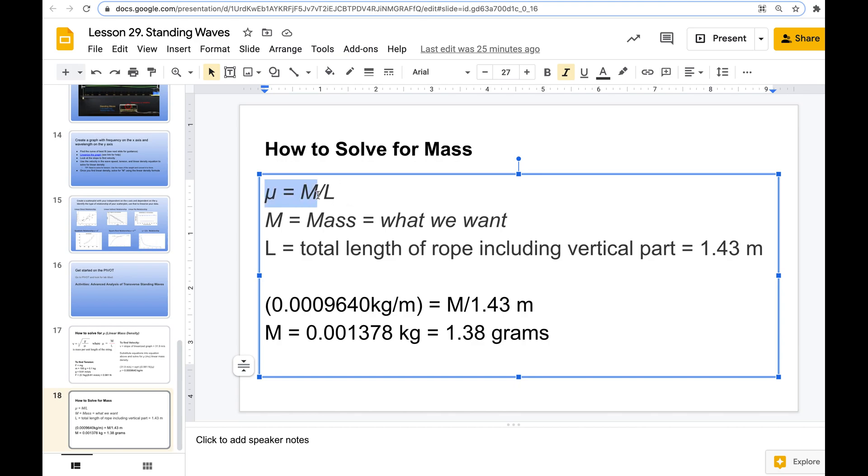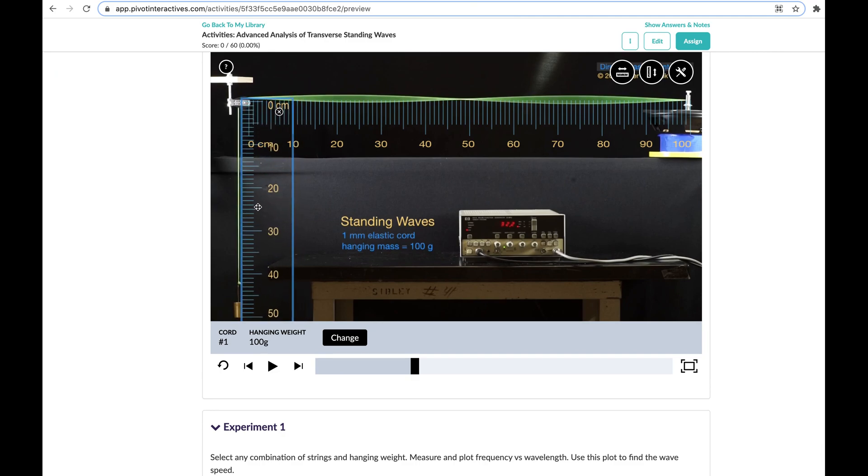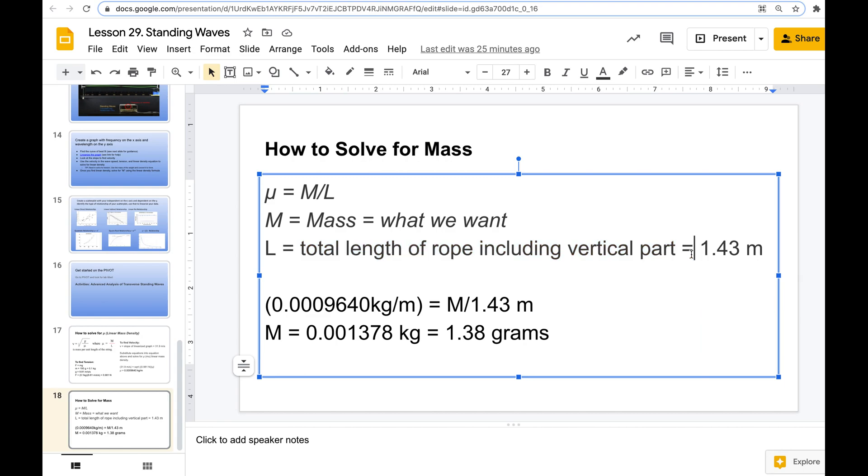And it's asking for the mass. So you're going to use that second equation, which is mu equals mass divided by length, which is the total length. So M is what we want. That's what we're solving for. L is the total length of the rope, including the vertical part. So if I go back to my simulation, I'm going to need to use this vertical measuring tool to figure out roughly what my distance is. So this is about 1 meter plus like 4.43-ish for my length of the rope. So I put 1.43 meters. Then we take my number from before, our mu value, linear mass, equals mass divided by 1.43 meters. Solve for that. I get this in kilograms. Convert that to grams. And I get about 1.38 grams, which makes sense because it's a rope and a cord and it's not going to have a huge mass. 1.38 grams is not a very big amount of matter. So it's quite light, which is reasonable for this one.